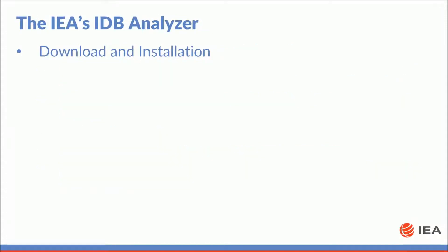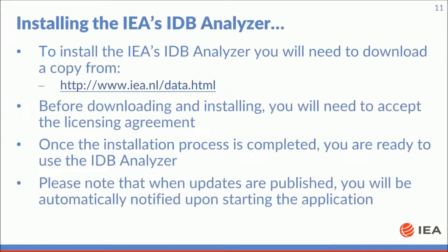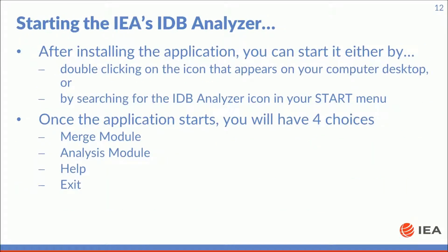Let's now take a look at the download and installation instructions. To install the IEA's IDB Analyzer, you will need to download a copy from the IEA's website. Before downloading and installing it, you will need to accept the licensing agreement. Once the installation process is completed, you're ready to use the IDB Analyzer. Please note that when updates are published, you will be automatically notified upon starting the application. Once you have installed the application, you can start it by either double-clicking on the icon that appears on your computer desktop or by searching for the IDB Analyzer icon in your start menu.